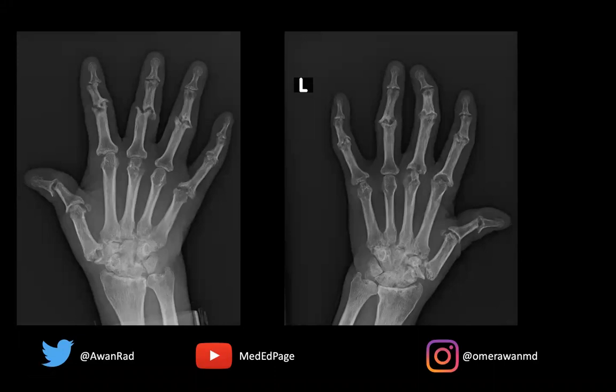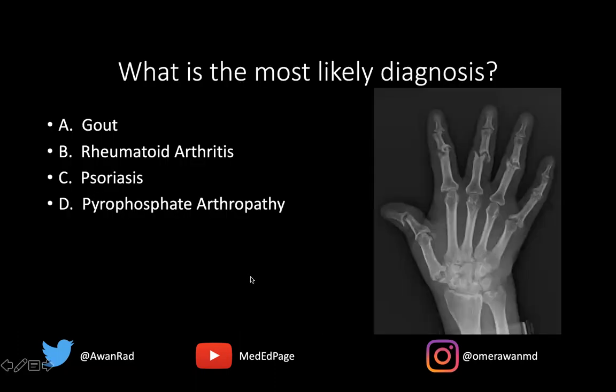Hello, everyone, and welcome to MSK Unknown Case Series, case number 70. Here we have a frontal and an oblique radiograph of the left hand. The high yield question I have for everyone is: what's the most likely diagnosis here?